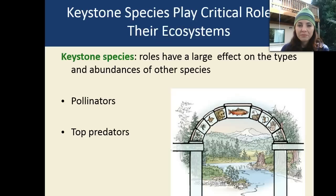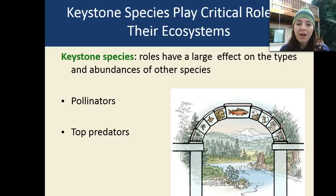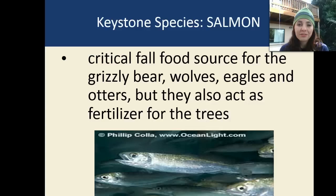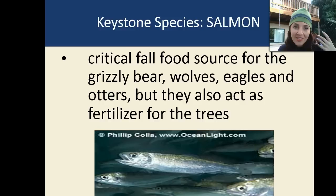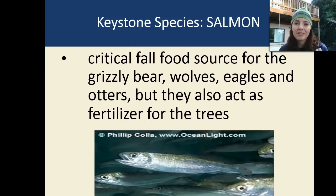A keystone species — these are species that have very important large roles in their ecosystems, affecting the types and abundances of other species, such as pollinators like bees and top predators. An example of a keystone species is the salmon. They're a critical fall food source for grizzly bears, wolves, eagles, and otters. They also act as a fertilizer for the trees — their feces helps fertilize the trees. Sometimes salmon aren't as numerous as they should be, and whenever the salmon population decreases, you see the grizzly bear, wolf, and eagle populations decrease as well. They're a very important species, especially up in Alaska.